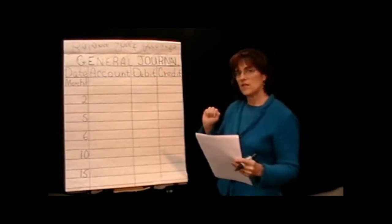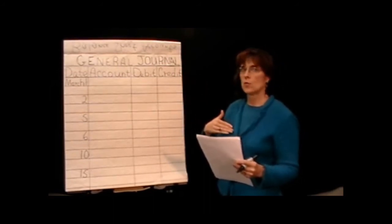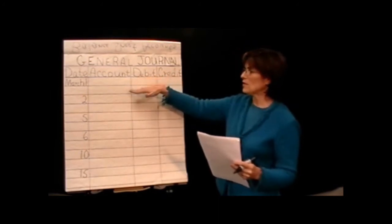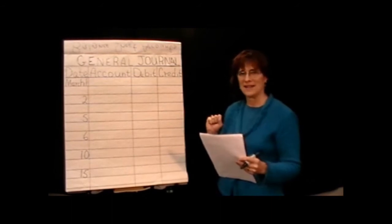For purposes of this very simple problem, we're just going to have one debit and one credit for each transaction. So each one of these transactions will be taking up two lines.